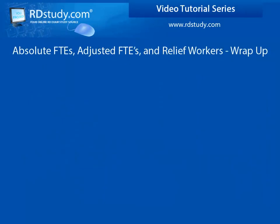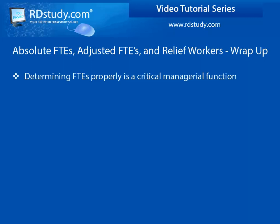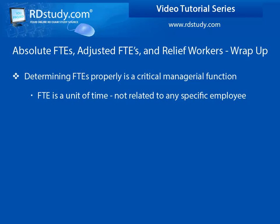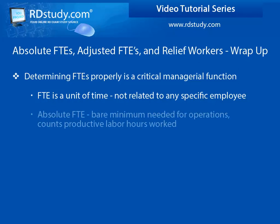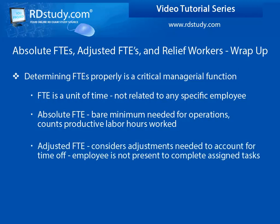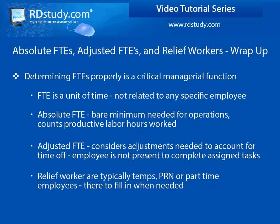Wrapping this up, let's touch upon a few key points to remember. Determining FTEs is an important skill for managers, as correct calculations are required for optimal business functioning. An FTE is a unit of time, typically related to 40 hours within one work week. Absolute FTEs relate to the bare minimum needed to run the business — the productive hours that need to be worked. Adjusted FTEs consider time that needs to be accounted for, such as time off due to illness, vacation, or other reasons when an employee will not be present. Relief workers are typically temps, as-needed, or part-time employees, hired to fill in when needed.